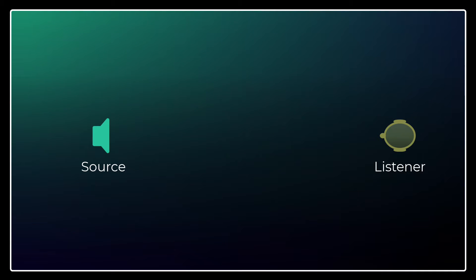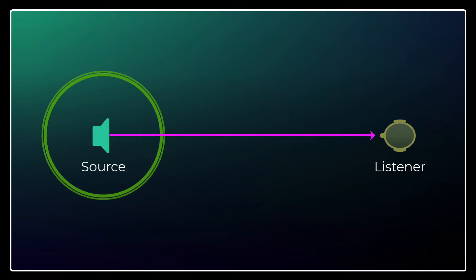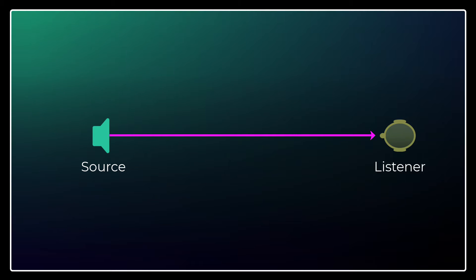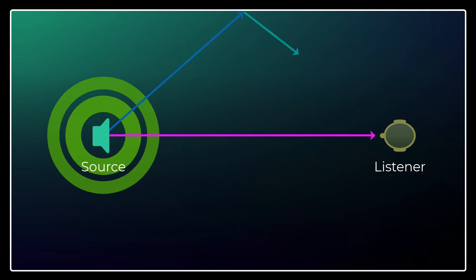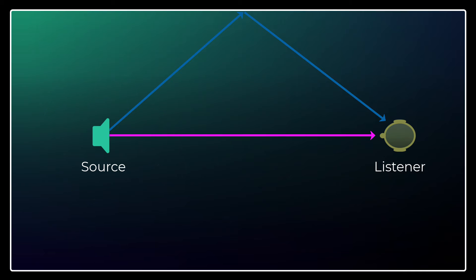There are three types of sounds that reach a listener from a sound source. First is the sound that arrives directly. Then there are early reflections as the sound first bounces off surfaces. And finally there are sounds that are reflected multiple times and washed together.